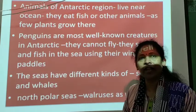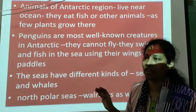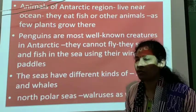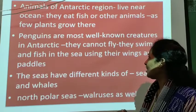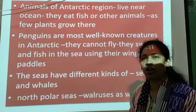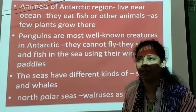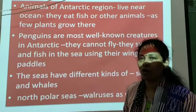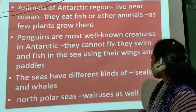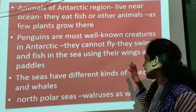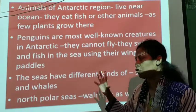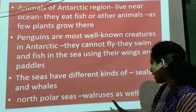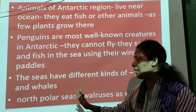Penguins cannot fly even though they have wings. What they do is swim and fish. Their feet are called flippers — with those flippers and legs they move and swim. The seas have different types of seals, and some seals and whales are also seen here. In the north polar region you can find walruses, which are well-known in the north pole.